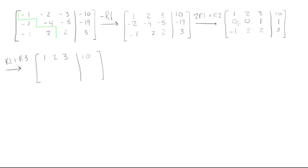Now the middle row, we're not working on the middle row, so that stays the same too, so we have 0, 0, 1, 1. Now R1 plus R3, so 1 plus negative 1 is 0, 2 plus 2 is 4, and 3 plus 2 is 5, and 10 plus 3 is 13.